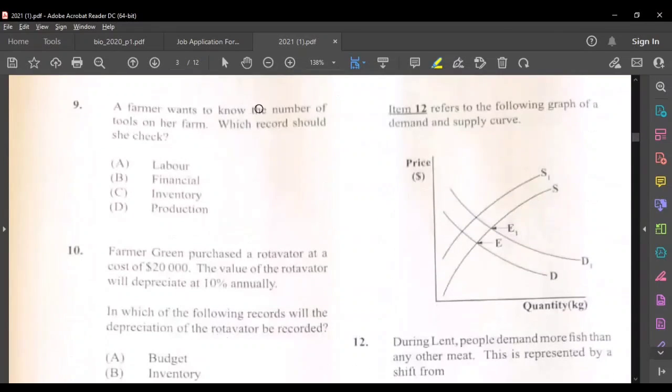Question nine, a farmer wants to know the number of tools in her farm, which record should she check? We have labor record, financial, inventory and production. C, inventory, would be the correct answer.